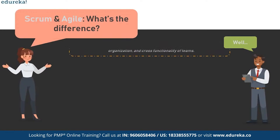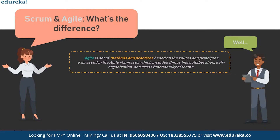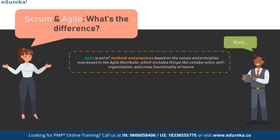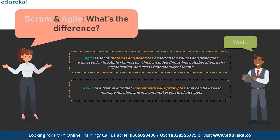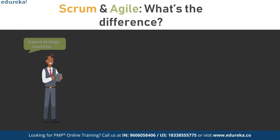So what is that distinction? Agile refers to a set of methods and practices based on values and principles expressed in the Agile Manifesto. This Agile Manifesto covers things like collaboration, self-organization, cross-functionality, and teamwork, among many other things. Scrum, on the other hand, is a framework that is used to implement agile development. While a team can be agile without practicing scrum, it cannot practice scrum and not be agile. Confused yet? Don't worry — here's a simple analogy.